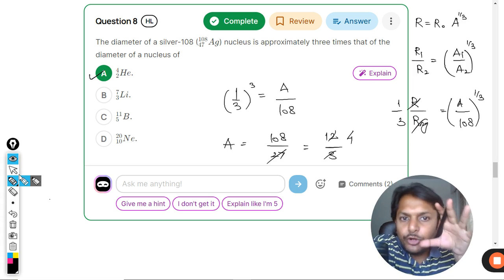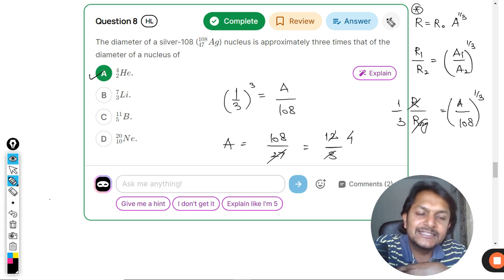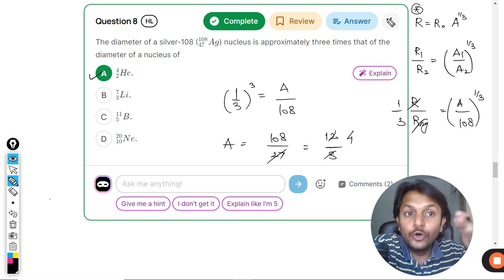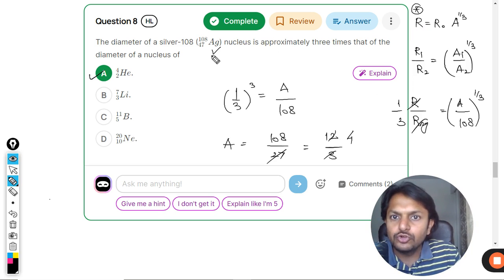So the important part in this question is, this formula is given in the data booklet. But my experience tells that students do not understand what this is. They don't know the meaning of the symbols there. R is the radius of the nucleus for whatever element that you talk about.